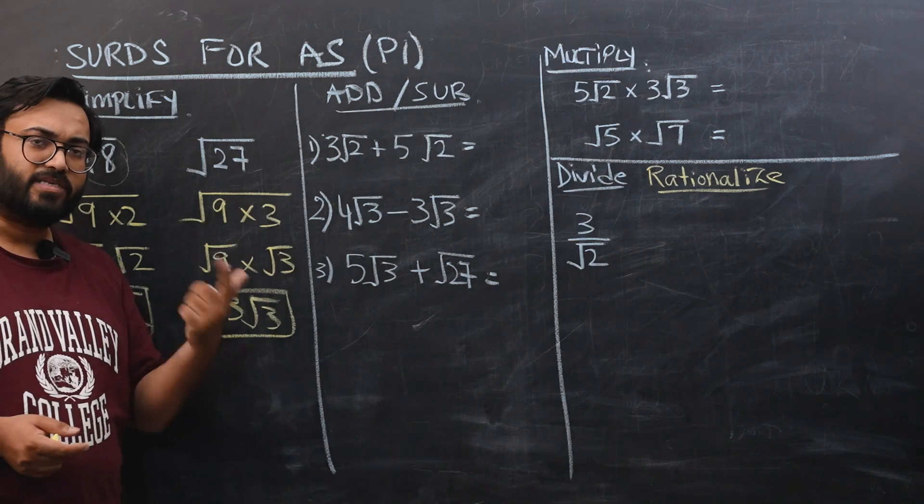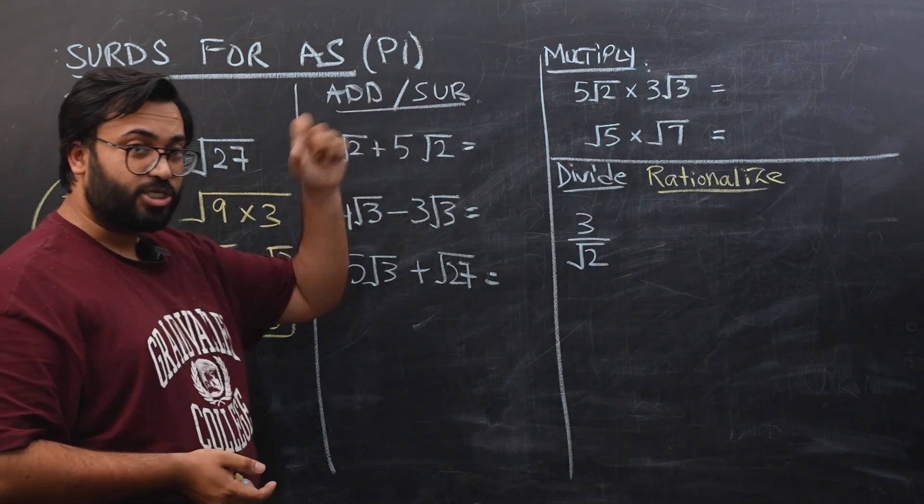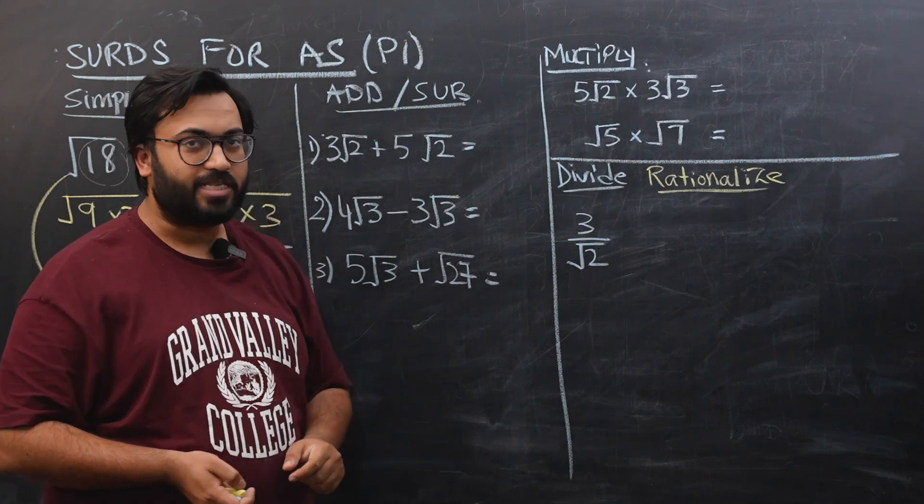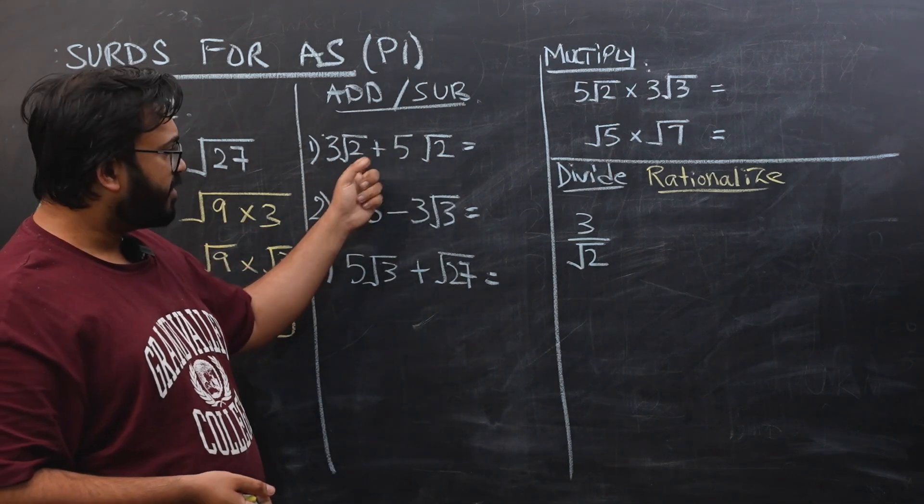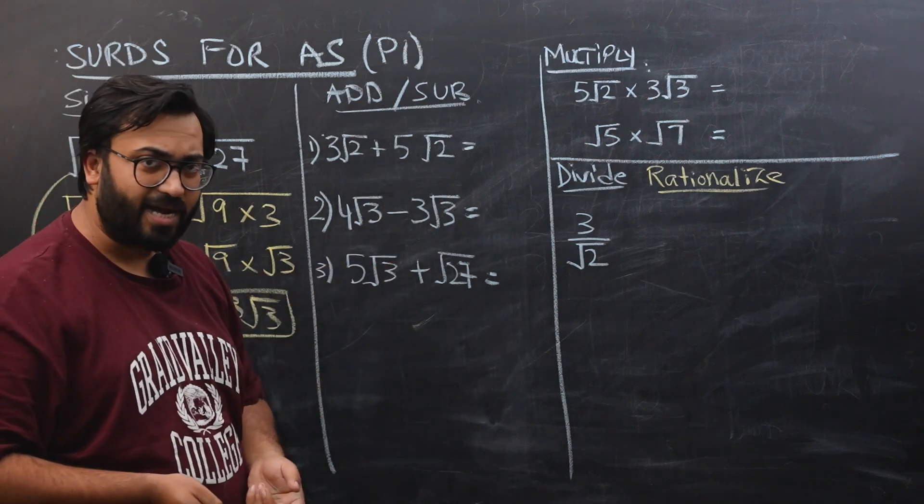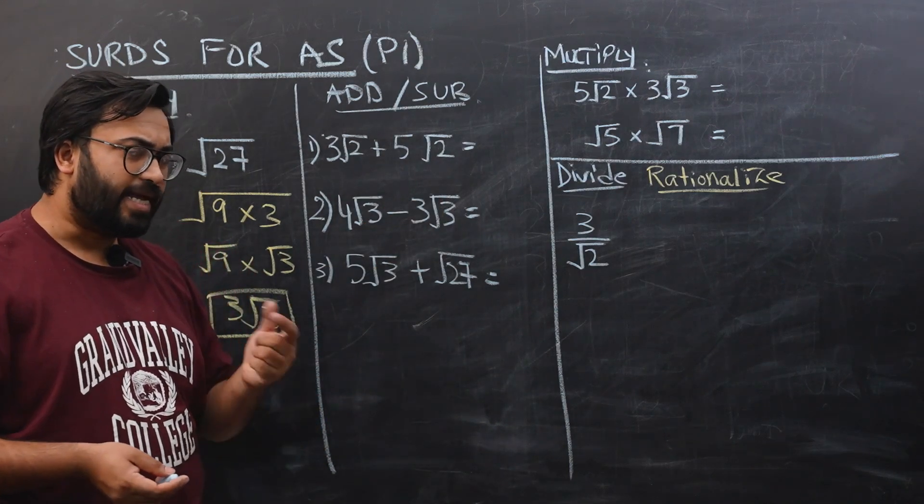Now for addition and subtraction, only identical surds can be added. For example, you have 3√2 and 5√2. They have the same square root and hence they can be added. You can actually visualize this in terms of algebra. For example, if you have 3x plus 5x, it would be 8x.